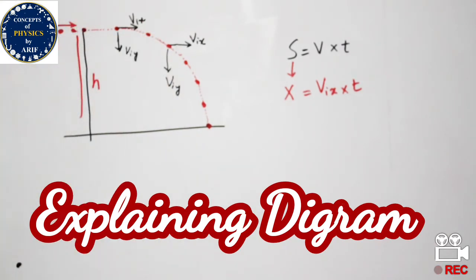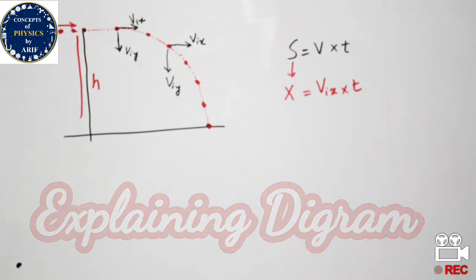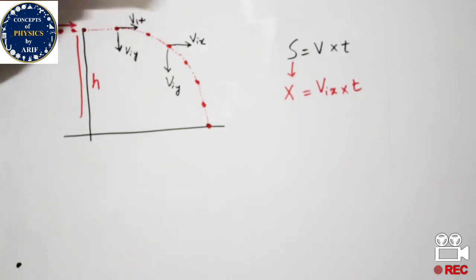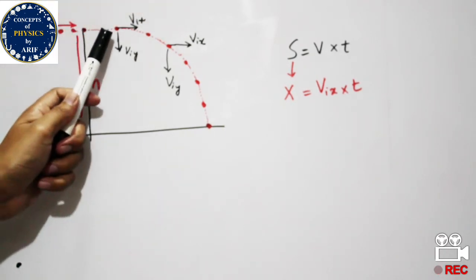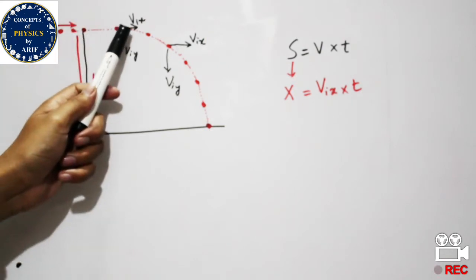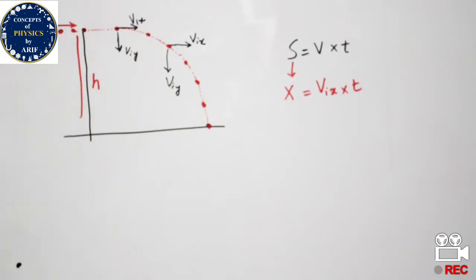what will be the horizontal velocity and vertical velocity? We need to understand that when the ball is horizontally hit or moved, it moves such that both its horizontal component of velocity and vertical component of velocity can also be calculated.